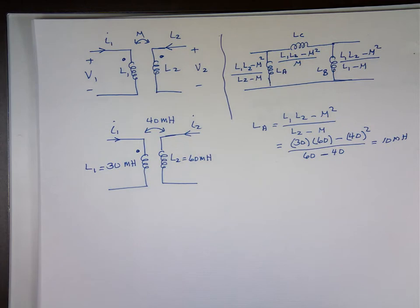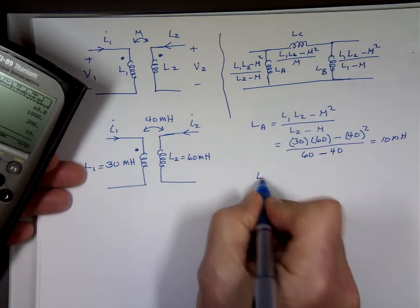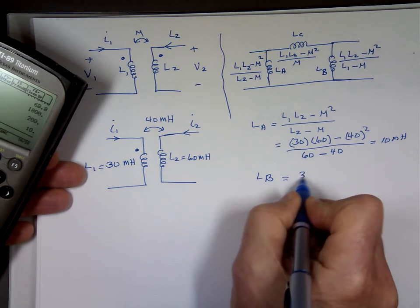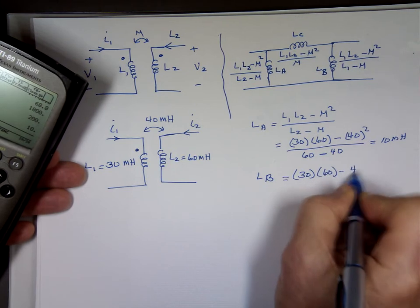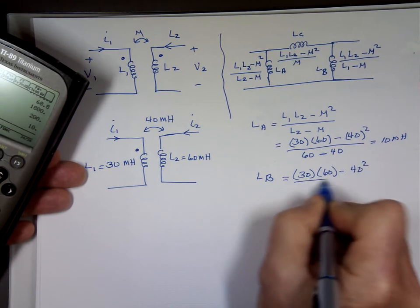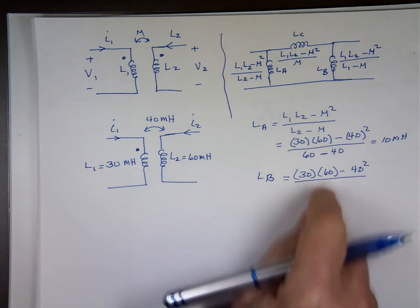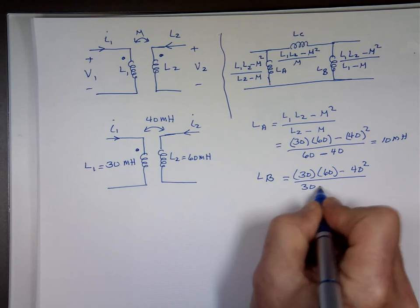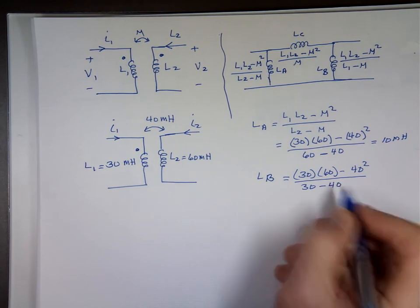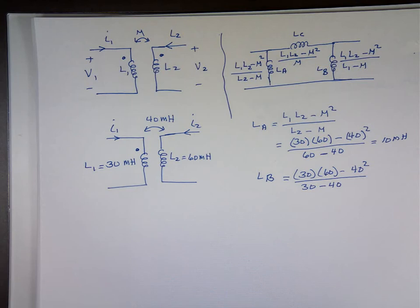Now let's look at the next one. The next one is going to be LB. The top is going to be the same. 30 times 60 minus 40 squared divided by L1 minus m. Notice it's going to be a negative value here. L1 is 30 minus 40.